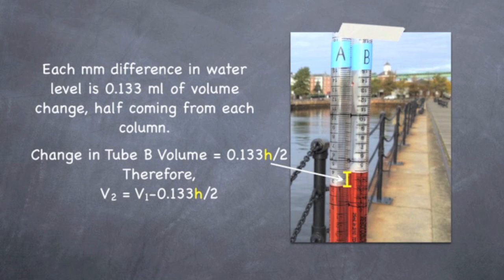Well, for my device, I've calculated that for each 1 millimeter change in water level, that that corresponds to a change in volume of 0.133 mils, with half of that volume change occurring in column A and the other half occurring in column B. So to calculate the change in volume of tube B only, we can take my conversion factor of 0.133 mils per millimeter and multiply it by half of the height change.